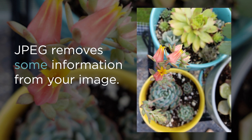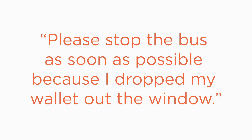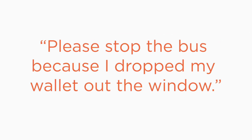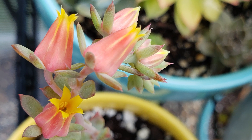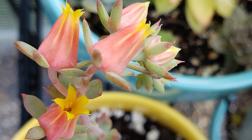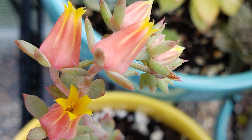Remember our example of the two sentences — 'please stop the bus' compared to 'please stop the bus as soon as possible because I dropped my wallet out the window'? A JPEG file format would look at the second sentence and say, 'we don't need that many words — let's take out as soon as possible.' JPEGs take out visual information that software determines isn't necessary. The result is a pretty good image that's easier to transfer or share online. However, you want to capture as much information as you can in your original scan because, as we've mentioned, you can take information out, but you can't put it back.